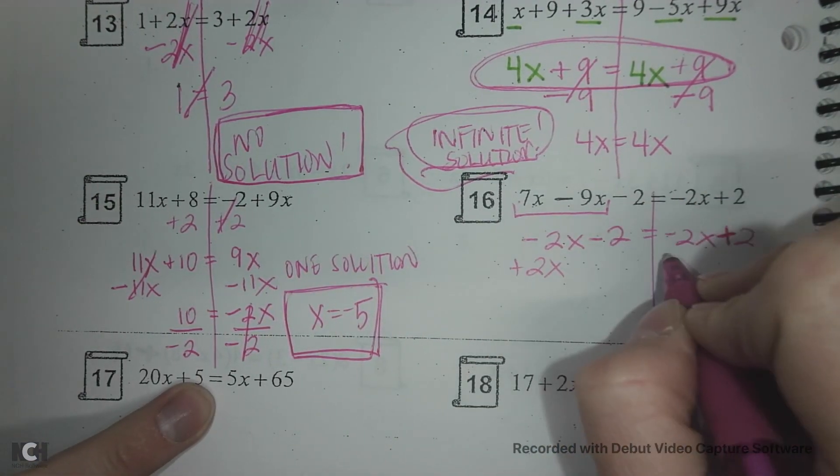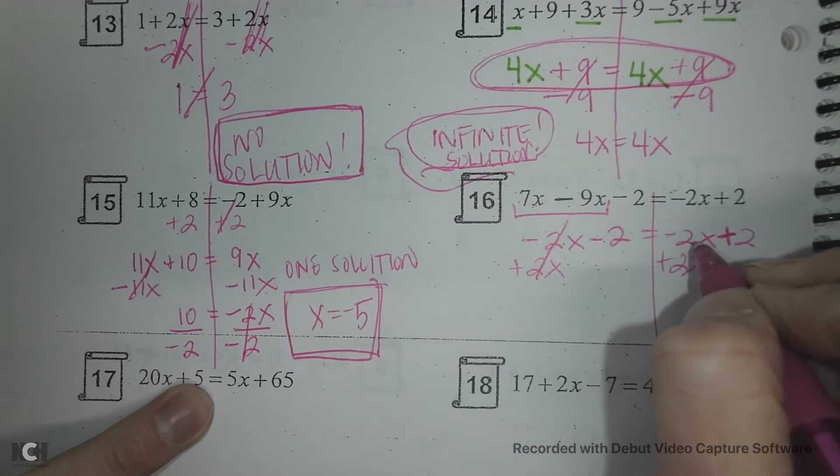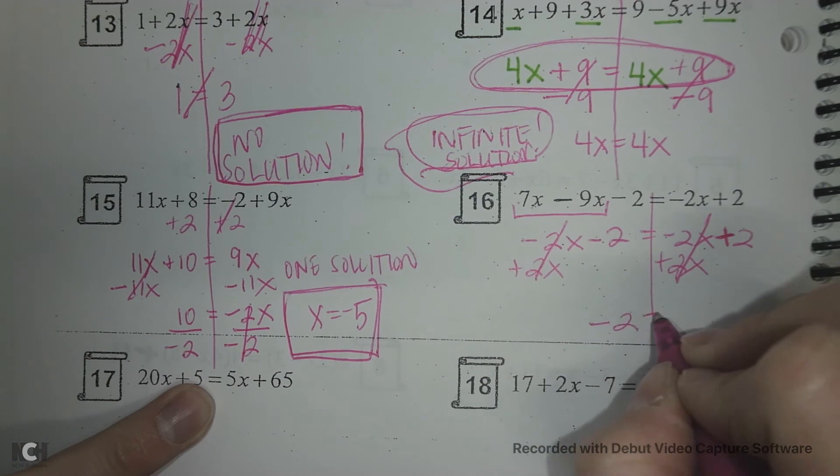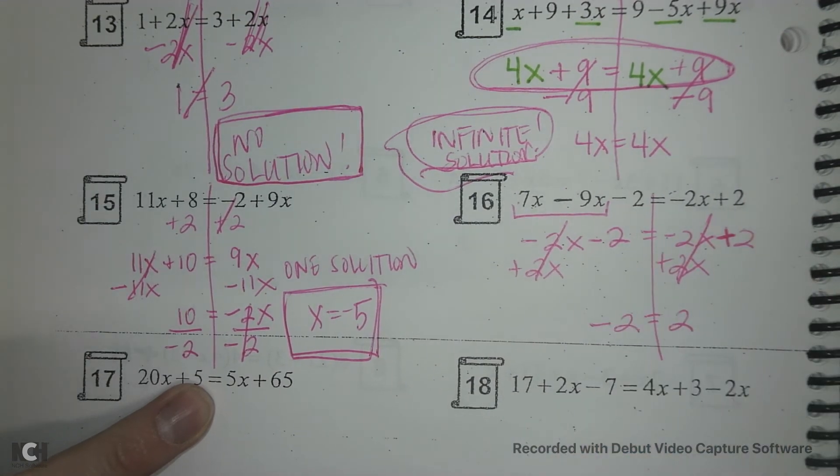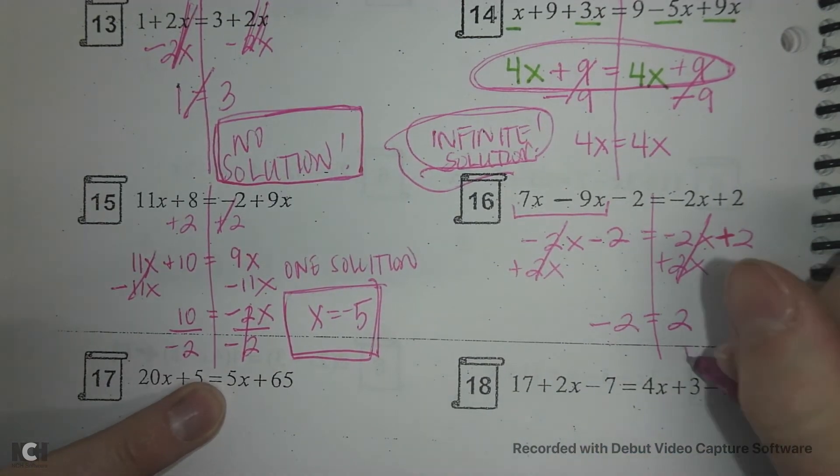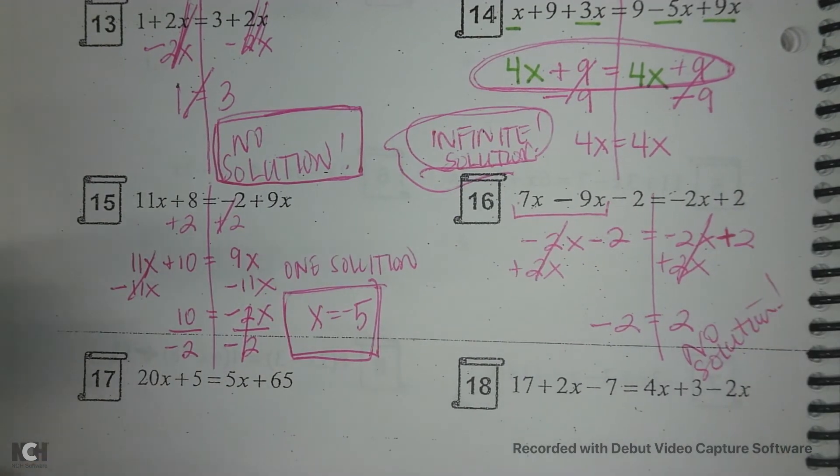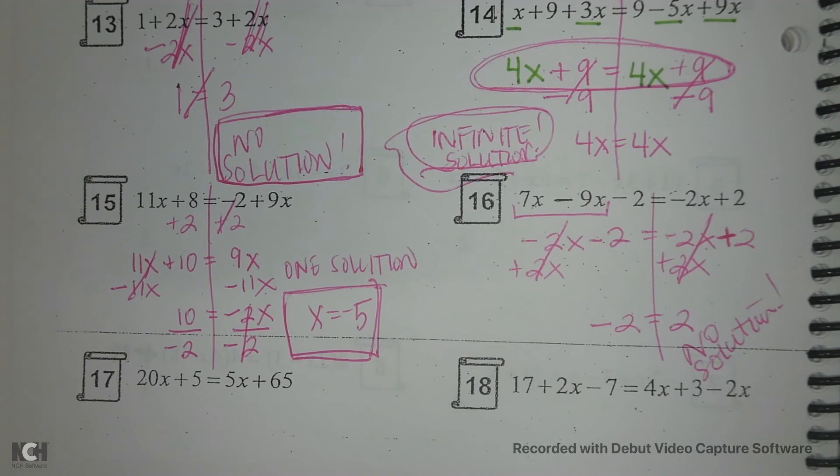We're going to add 2x to each side. Notice that my 2x's go away. And now I have negative 2 equals positive 2. Those aren't the same. This is a no solution. Okay. If you have any more questions let your teacher know. Have a wonderful day. Bye guys.